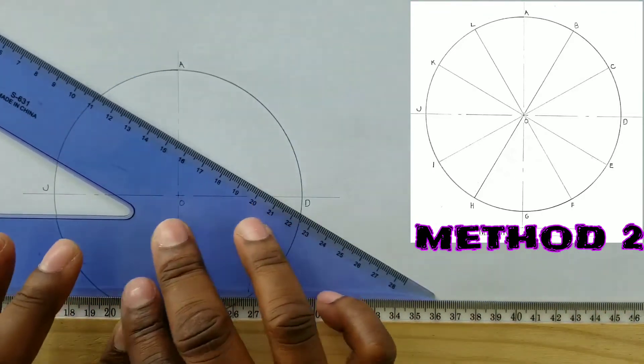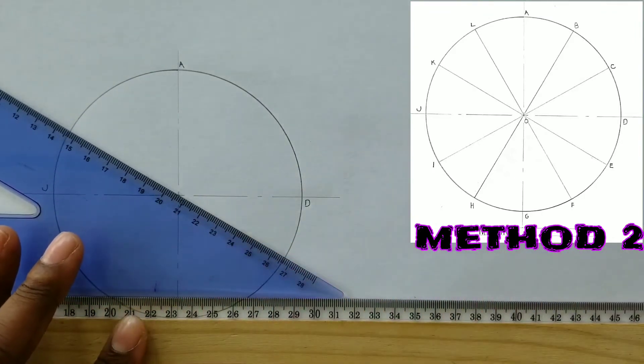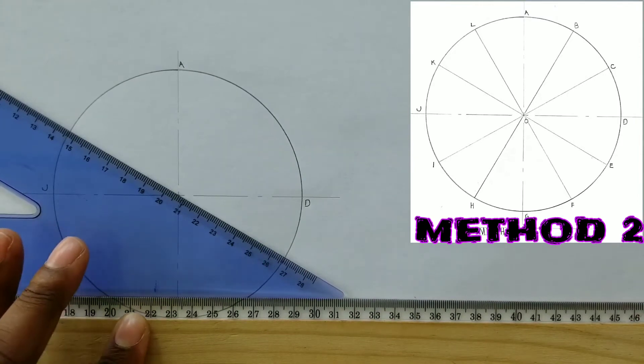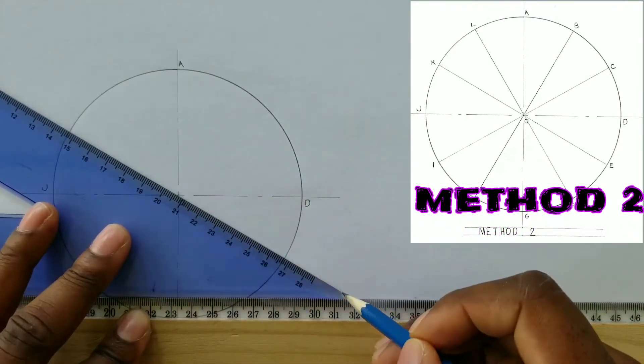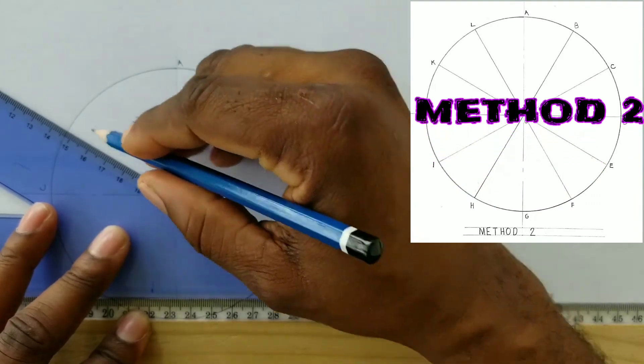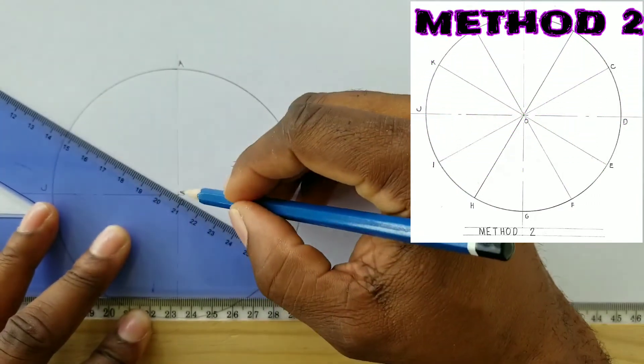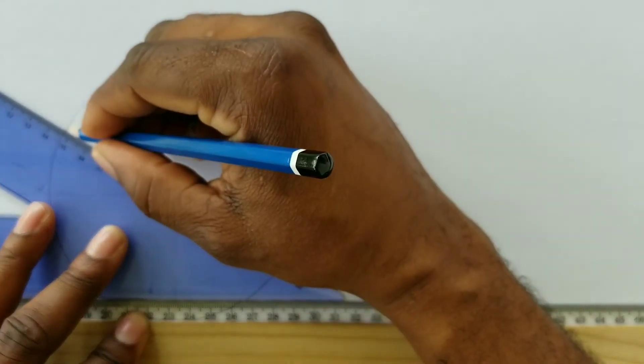The first line we draw will be drawn with the 30-degree side of our set square. Ensure that the line passes through the center and touches the circumference at both sections.